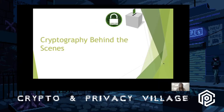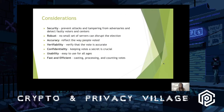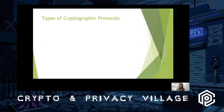Now I'll talk about the cryptography behind the scheme. The considerations we have: security — preventing attacks, preventing adversaries from tampering with the election, and detecting faulty voters and tally centers; robustness — no small set of servers should be able to disrupt the election; accuracy — the results should reflect how people actually voted; verifiability — we should be able to verify votes are accurate, and individuals should be able to verify their vote was counted correctly; confidentiality — keeping votes secret is crucial; usability for all ages; and speed and efficiency in casting, processing, and counting votes.